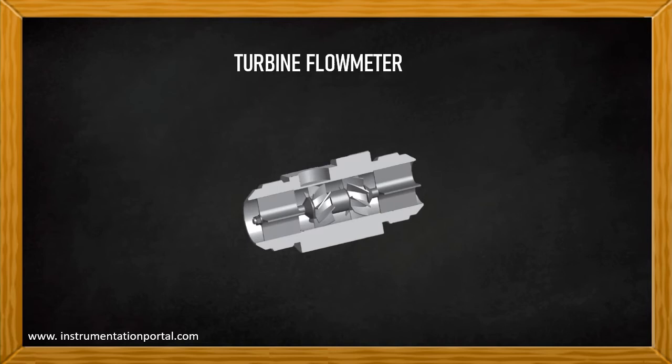Turbine meter measures volumetric flow by means of the rotor, which is rotated by the mechanical energy of the fluid passing it. Inside a turbine flow meter, there are rotor and straightening vanes. So, those are the obstruction parts.